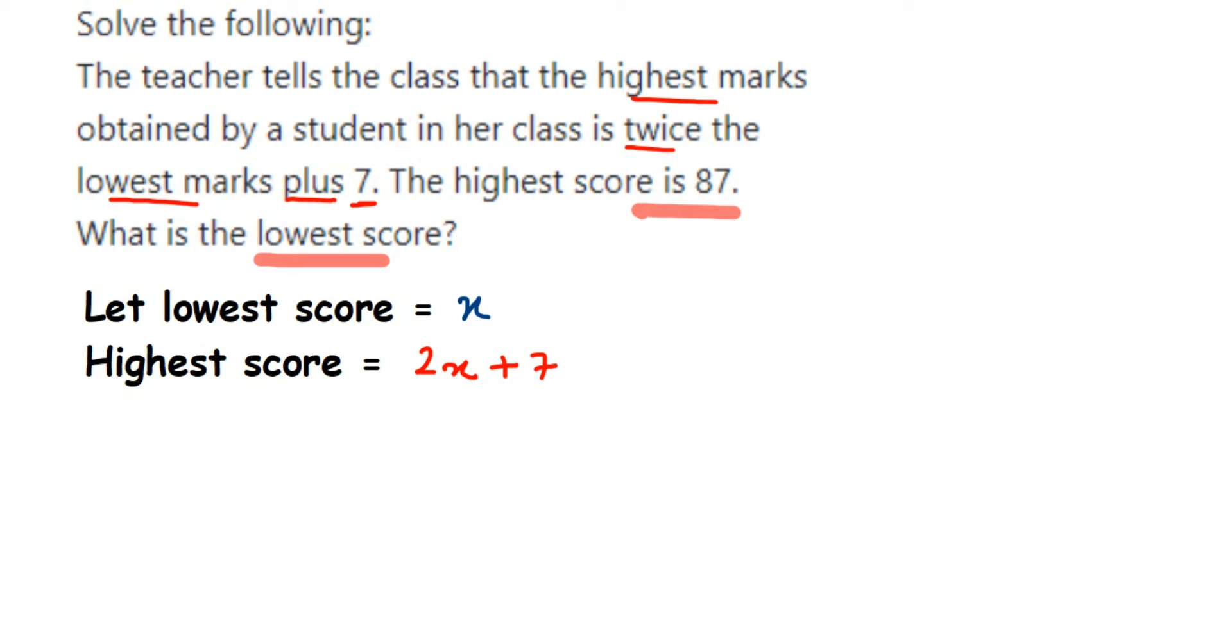The relationship between the highest and lowest mark is 2x plus 7, but in the given question we also mentioned that the highest score is 87. So here I'm going to substitute 87, and I know the relationship is 2x plus 7.